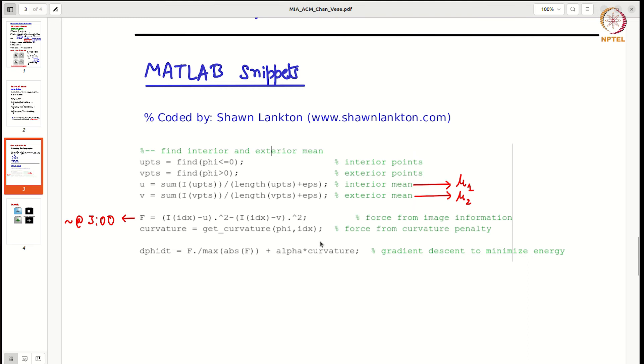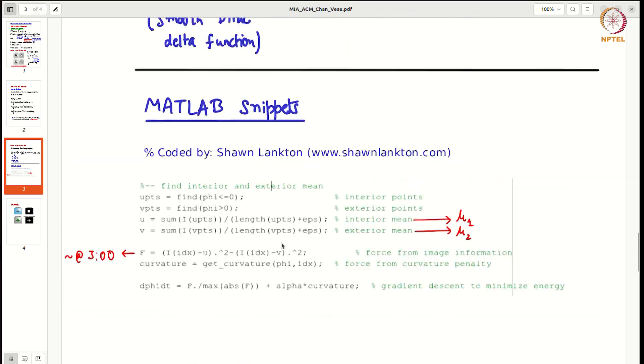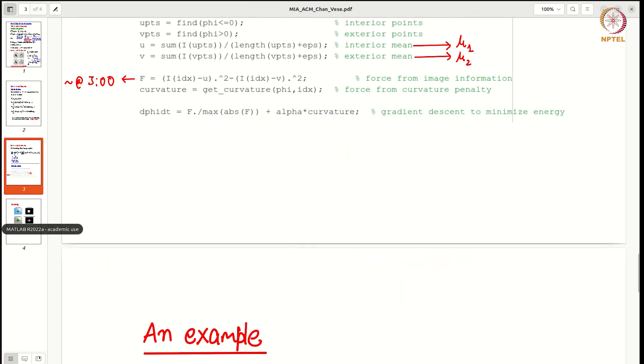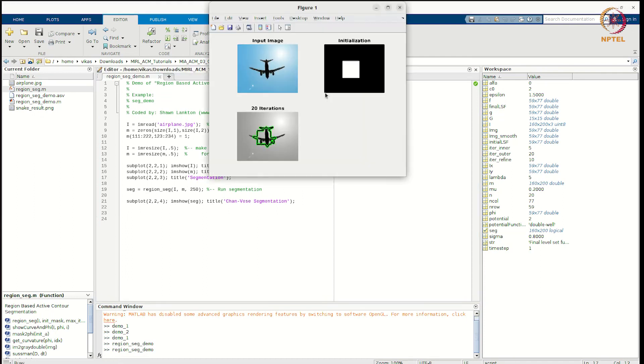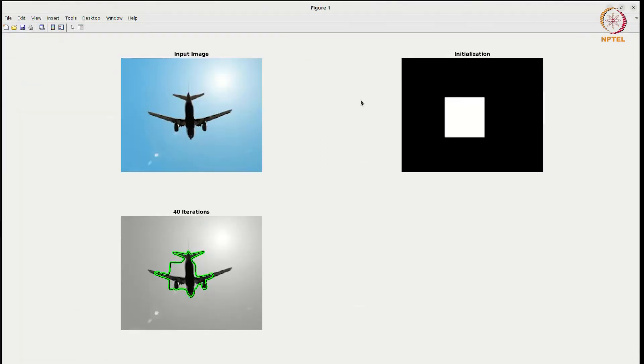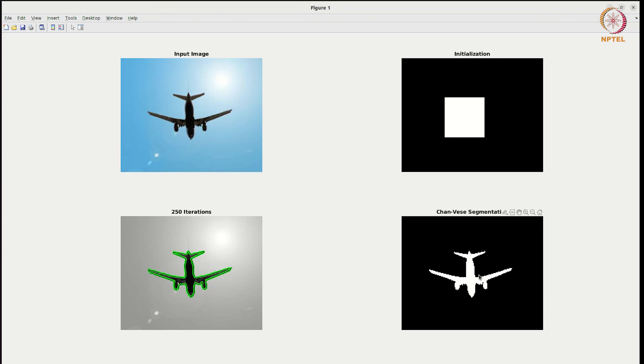And then they are solving some equation d phi by dt. An example implementation of Chan-Vese segmentation is here. You start with an input image of this aircraft, and then this is your initialization. After some 200 iterations, 250 iterations, it will completely segment the airplane.